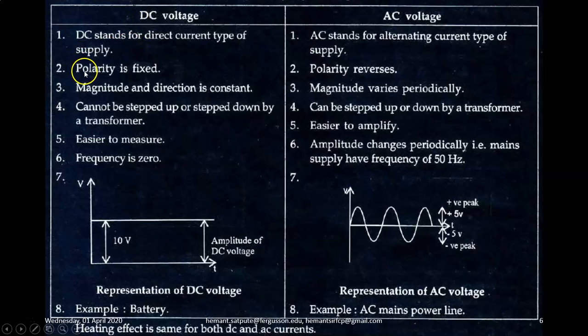For DC voltage, polarity is fixed. For AC, polarity reverses after a certain period of time. For DC, magnitude and direction is constant. For AC, magnitude varies periodically.